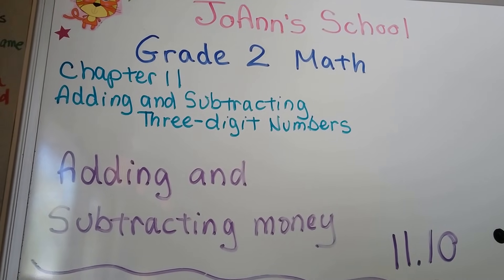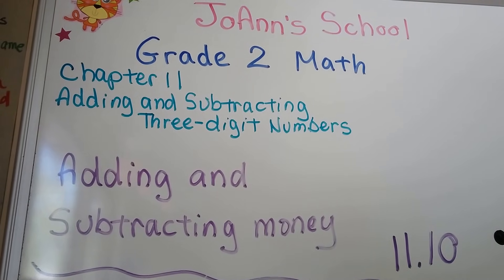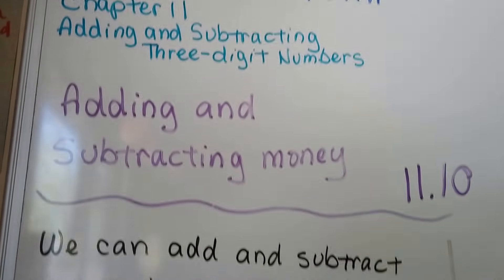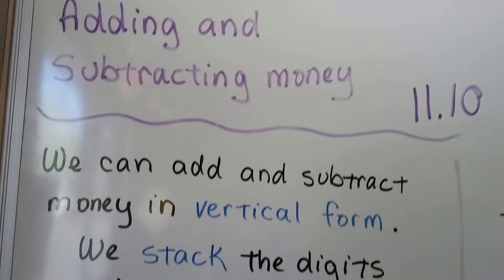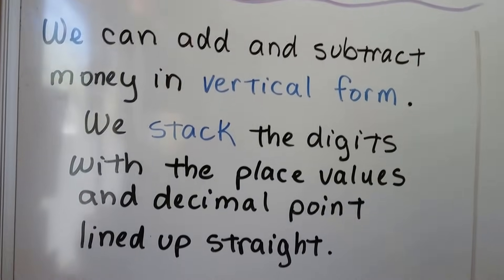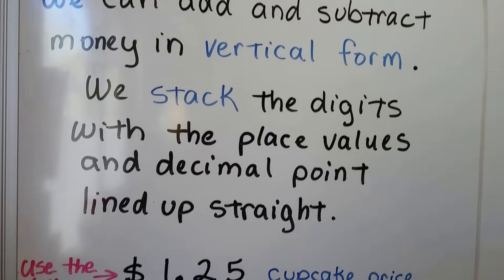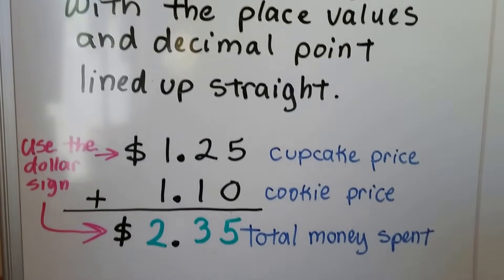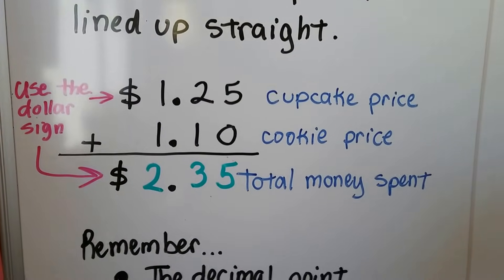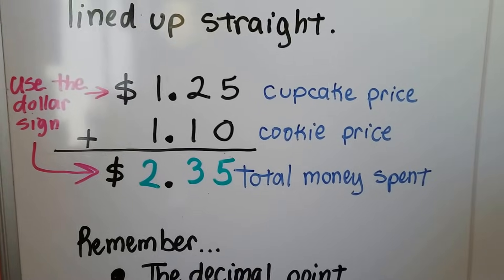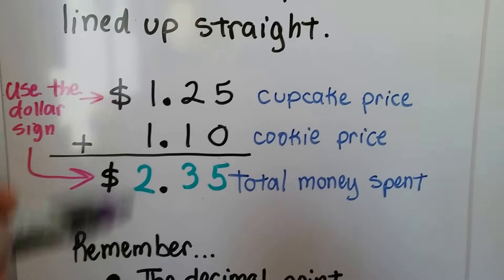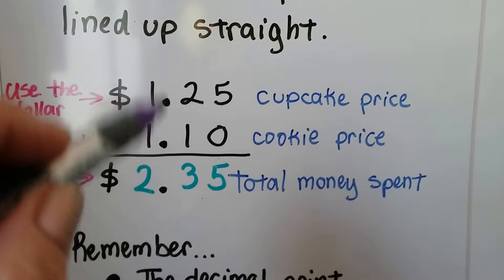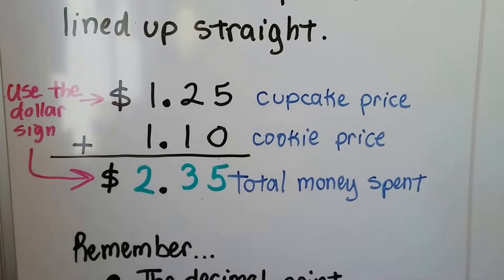We're now at lesson 11.10 and this is adding and subtracting money. We can add and subtract money in vertical form. That means we stack the digits with the place values and decimal point lined up straight. We have to make sure our columns going up and down are nice and straight and our decimal points are stacked nice and pretty on top of each other.